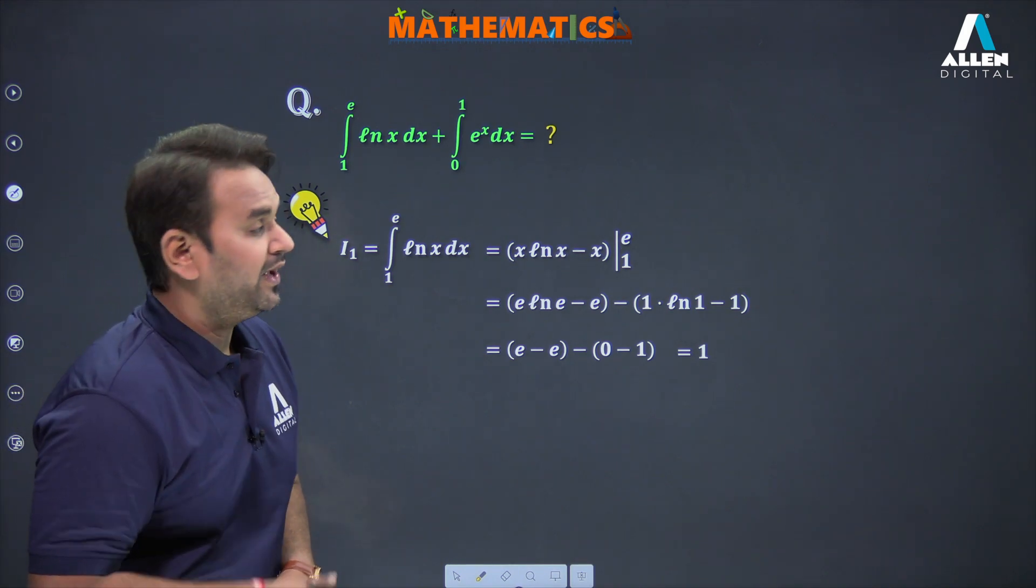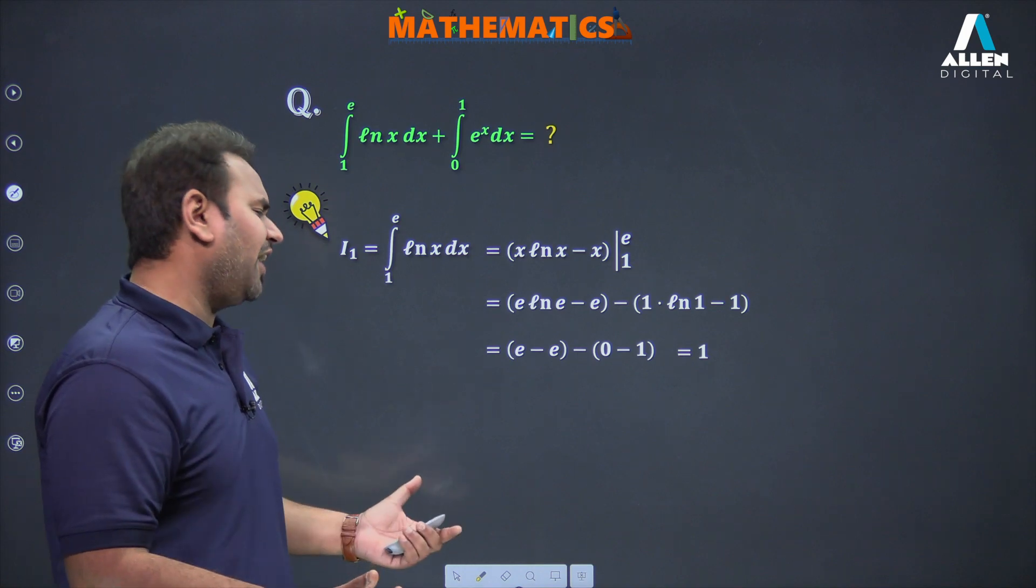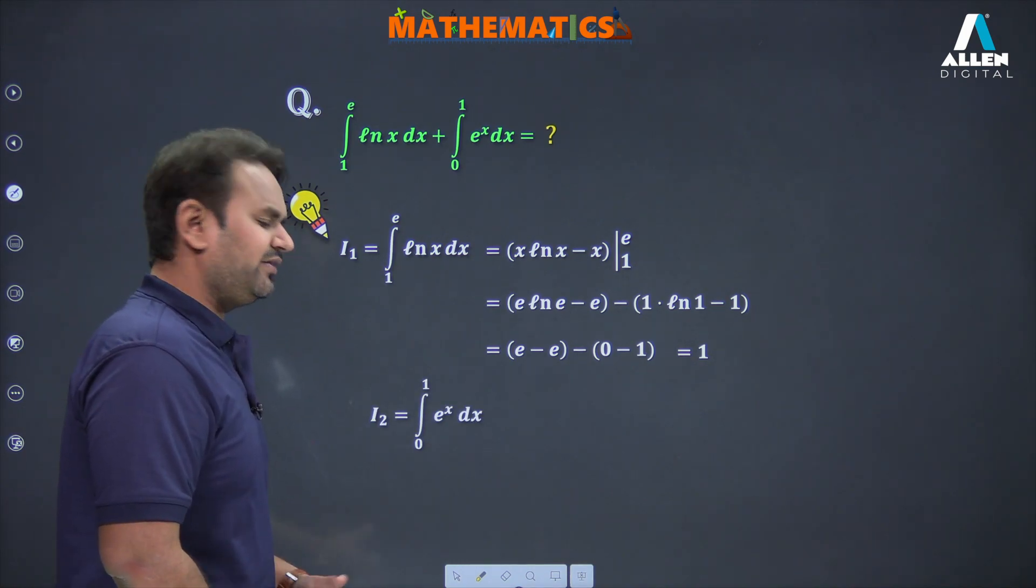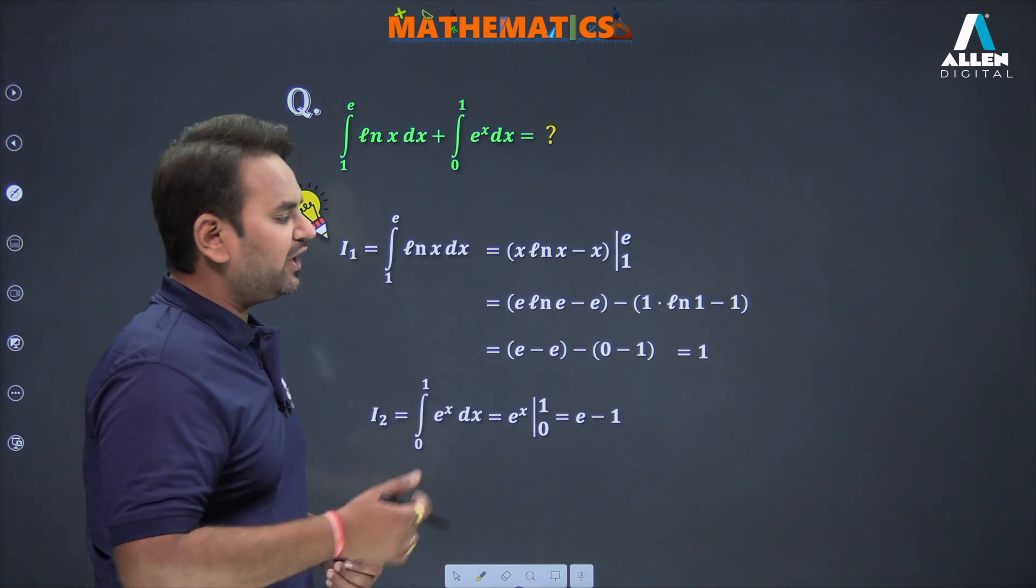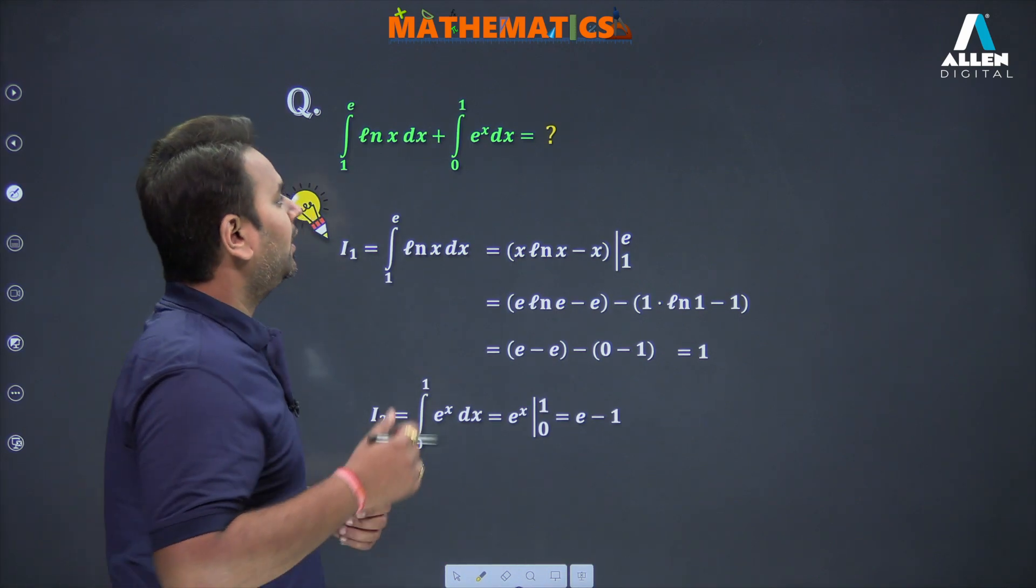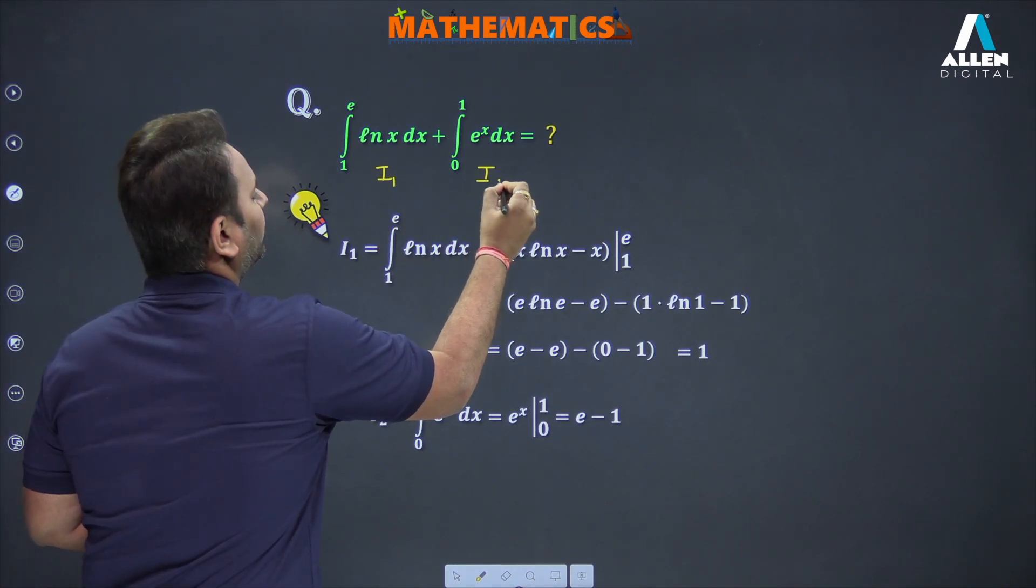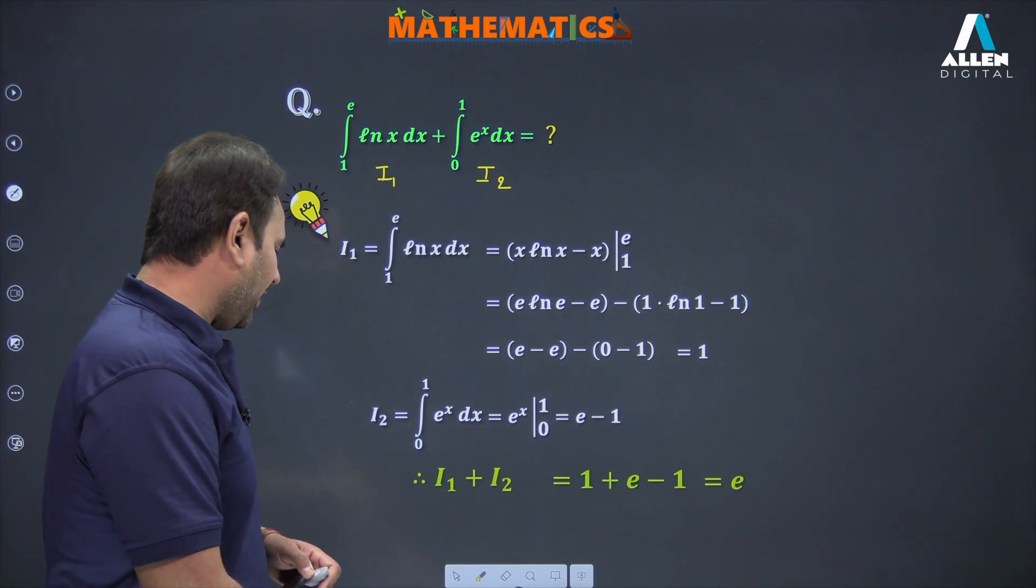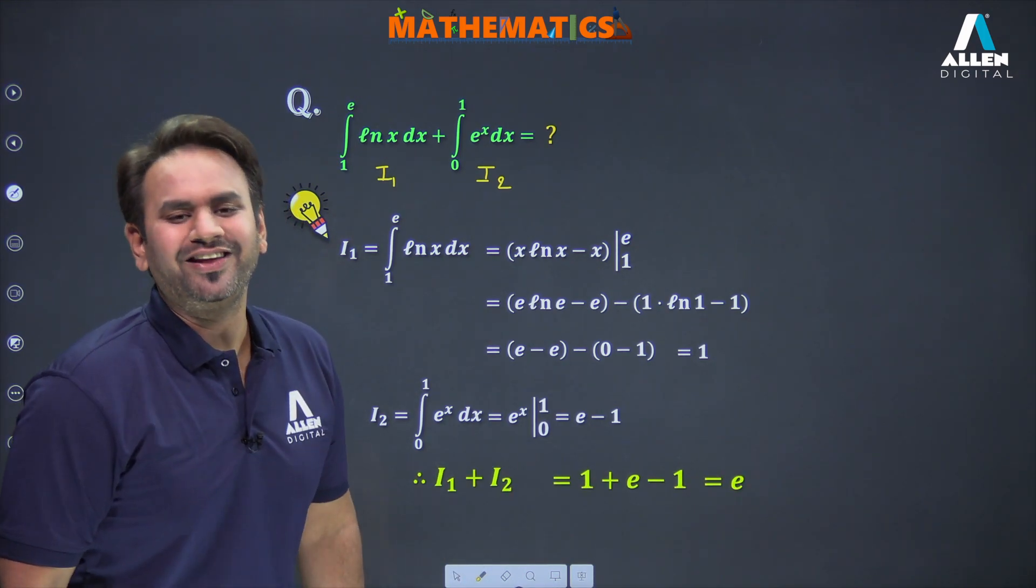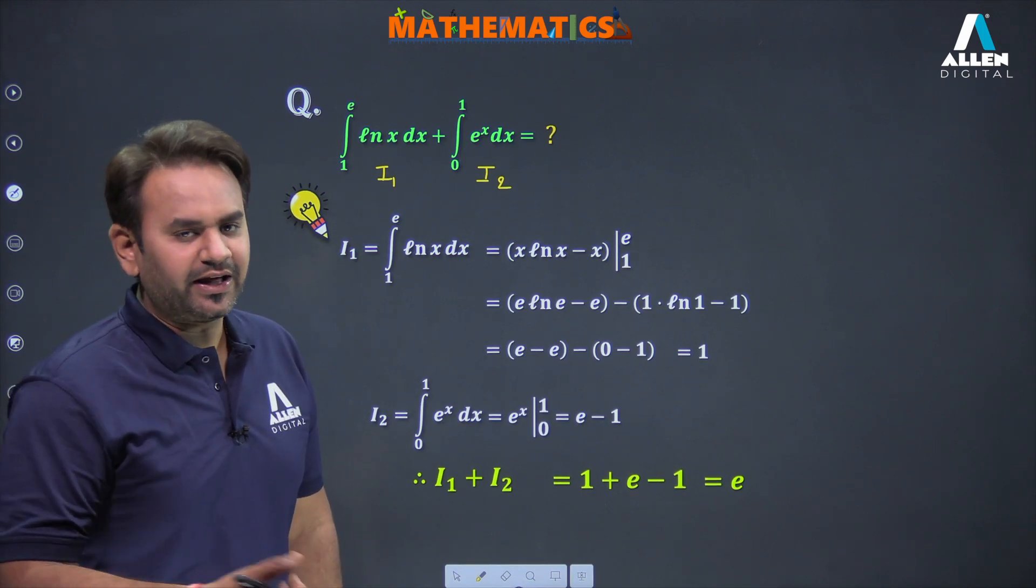Let's see the second integration, which is very easy. The integration of e^x is e^x, so e^x from 0 to 1 gives e minus 1. What do I want? I want I₁ plus I₂. This is your I₁ and this is your I₂. So if I₁ plus I₂ is needed, you can see that I₁ plus I₂ equals e.